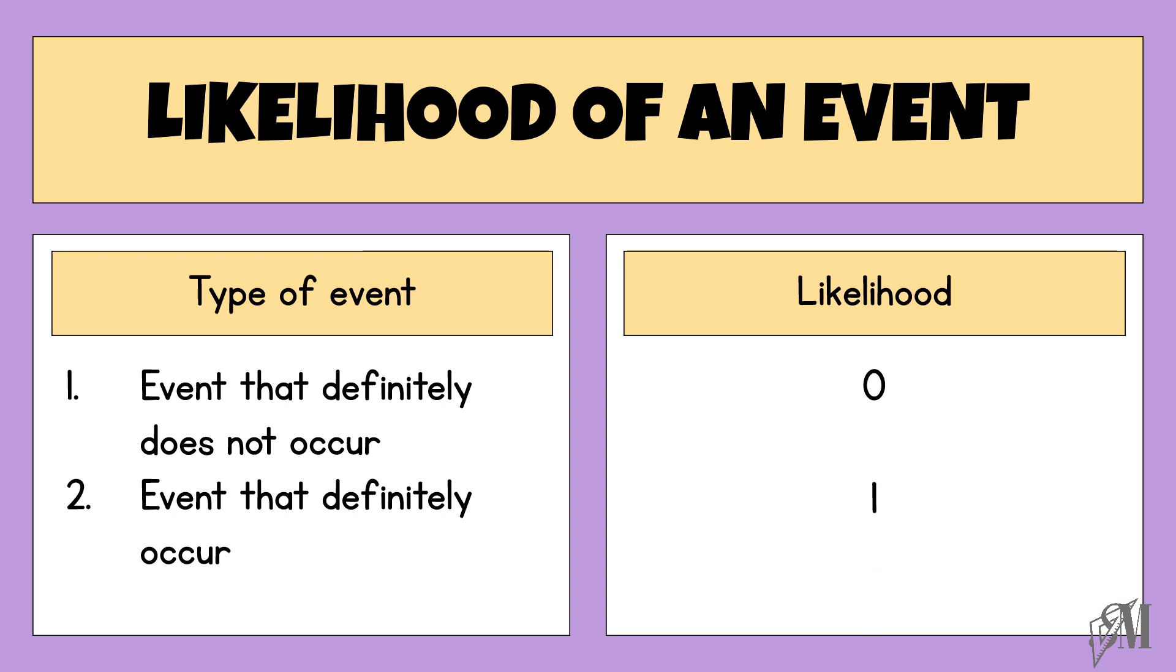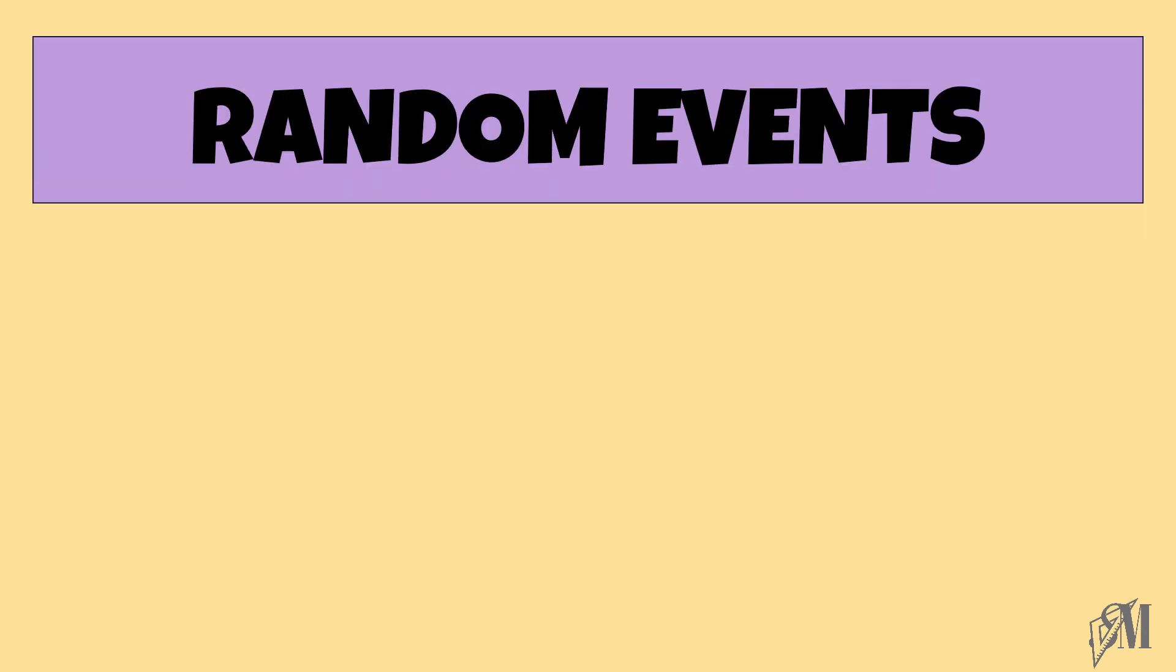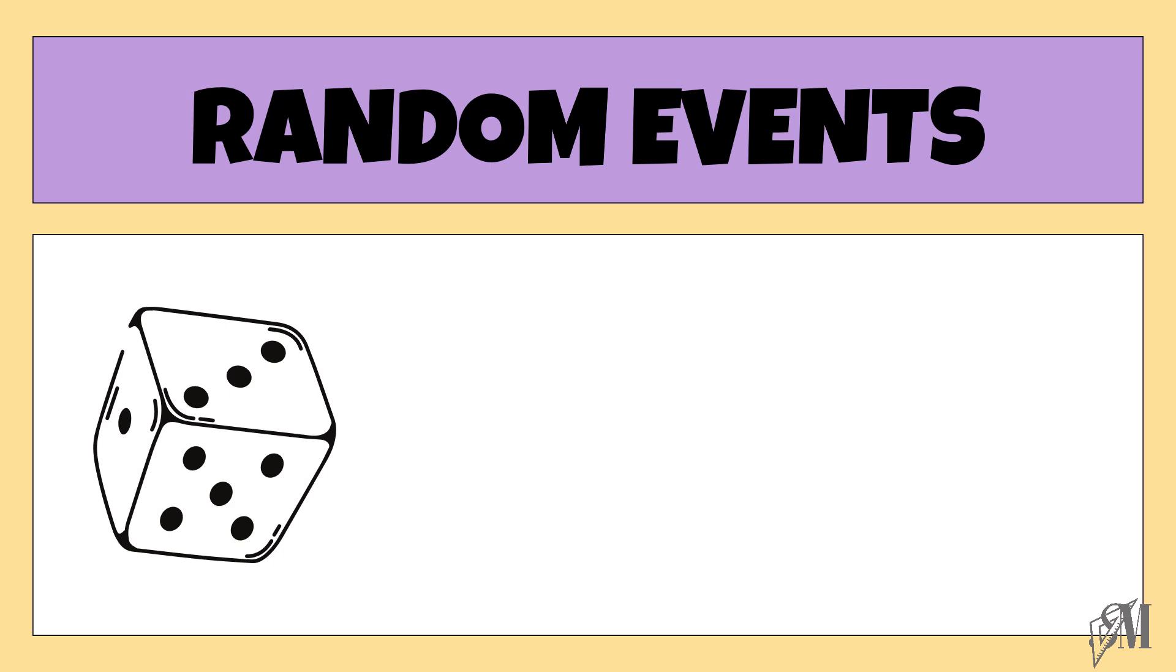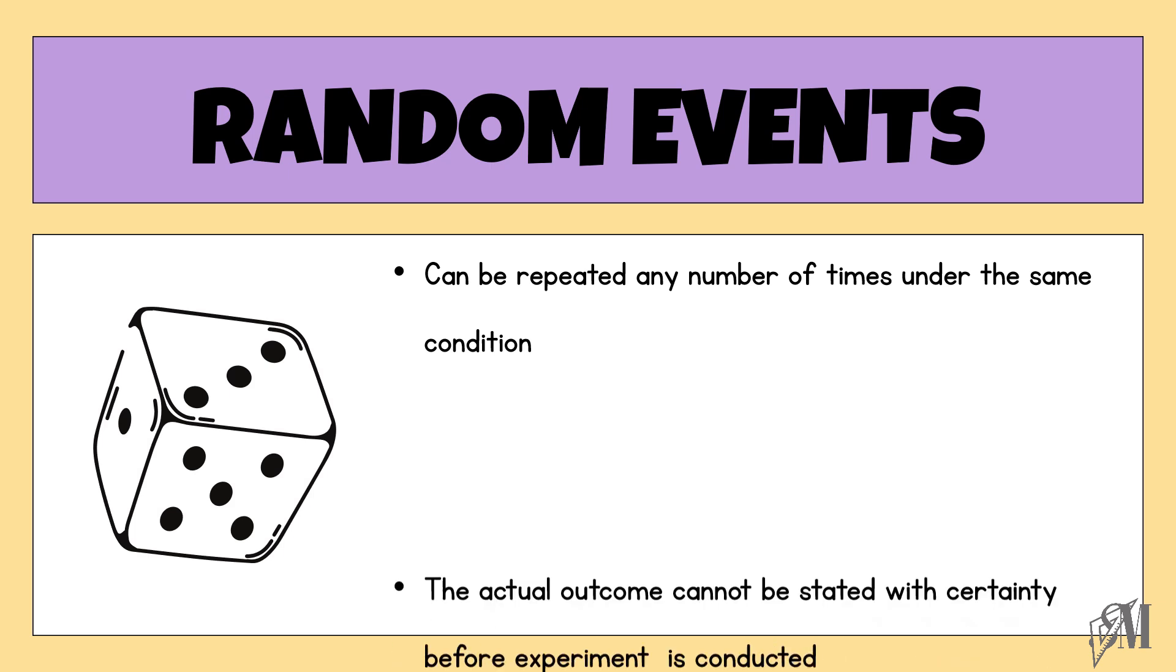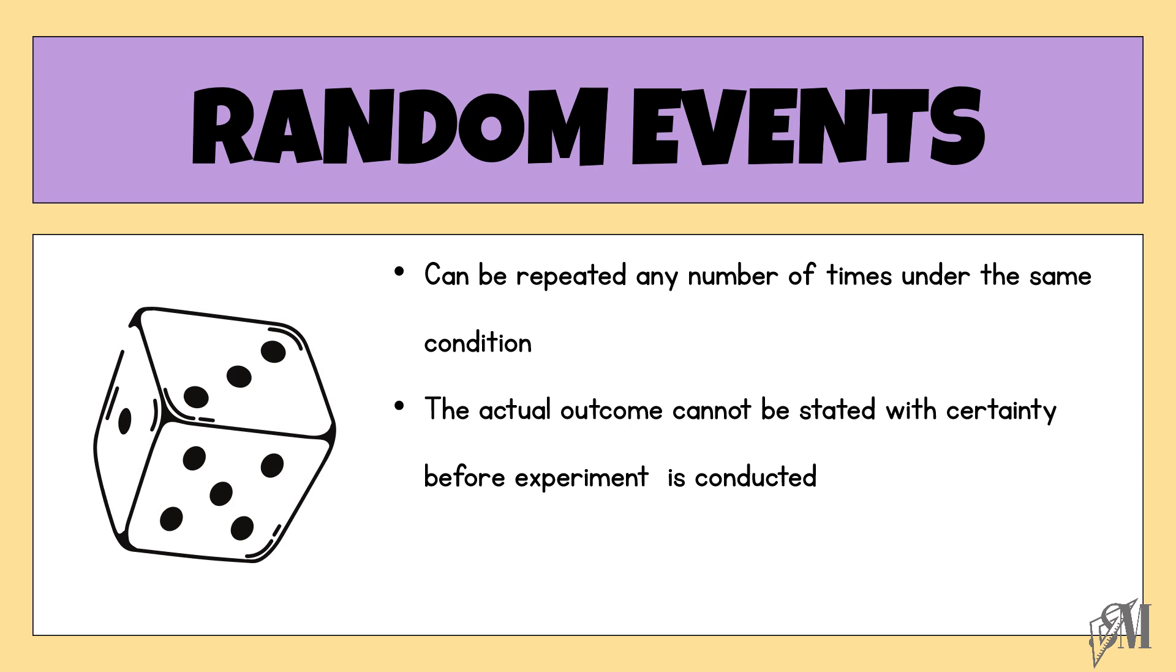Let us discuss the features of random events now. Rolling a die is a random event. Why do we call it random? It is because it can be repeated any number of times under the same condition. Here the same condition includes the same die. Then the actual outcome cannot be stated with certainty before the experiment is conducted.